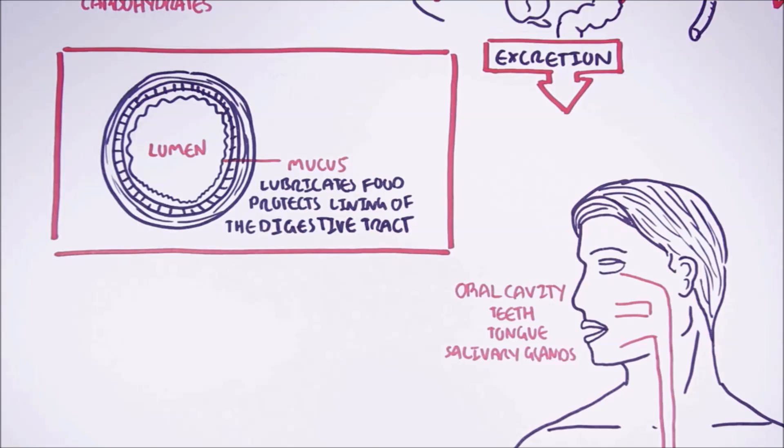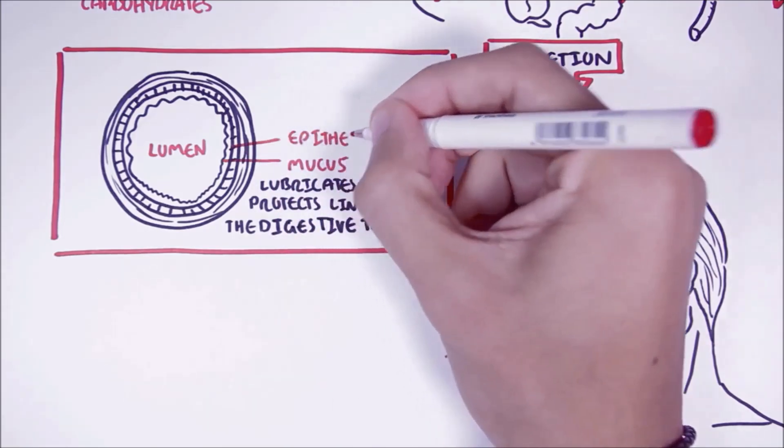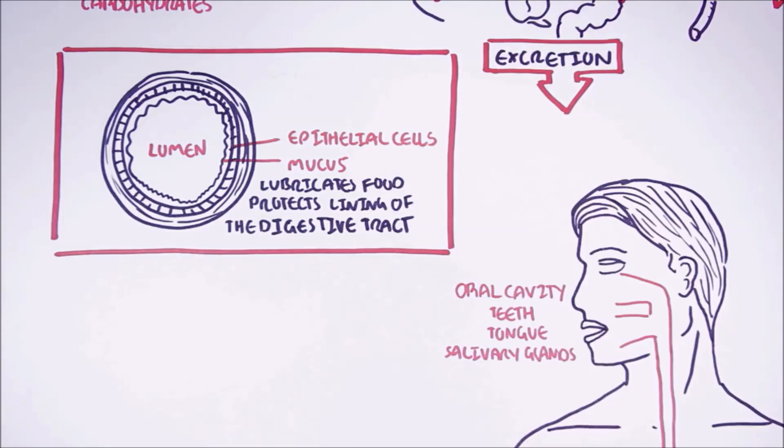Then you have the epithelial cells, the lining of the digestive tract that forms the tract itself. Some of these cells are what produce and secrete mucus.